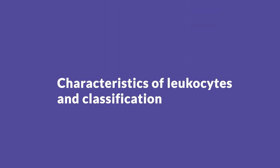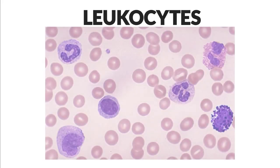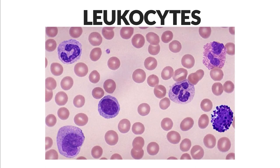The characteristics of leukocytes and their classification. Leukocytes have the characteristic of possessing a nucleus and cytoplasmic organelles, which allows for easy morphological differentiation. From the morphological point of view of the nucleus, leukocytes have been classified into two main groups.